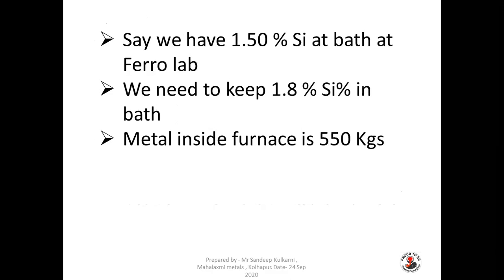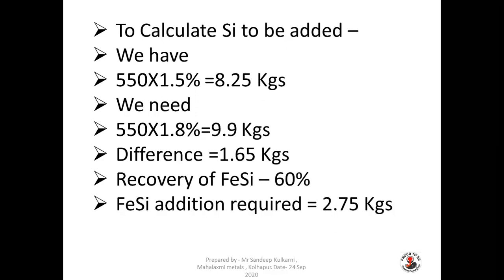Similarly for silicon: we have 1.5% silicon in the bath and we need 1.8% in the bath chemistry. The metal inside the furnace is 550 kg. To increase silicon by 0.3% in 550 kg: 550 × 1.5% = 8.25 kg of silicon available, whereas 550 × 1.8% = 9.9 kg required. The difference is 1.65 kg. With a ferrosilicon recovery of 60%, we have to add around 2.75 kg of ferrosilicon to achieve 1.8% in the bath.